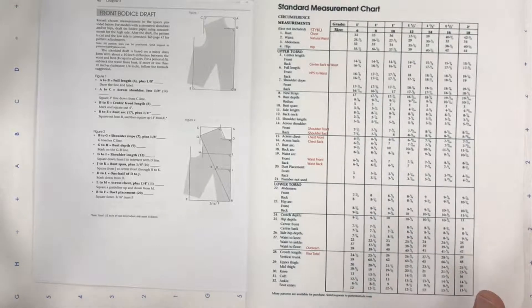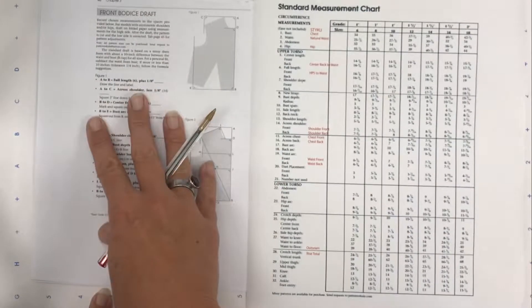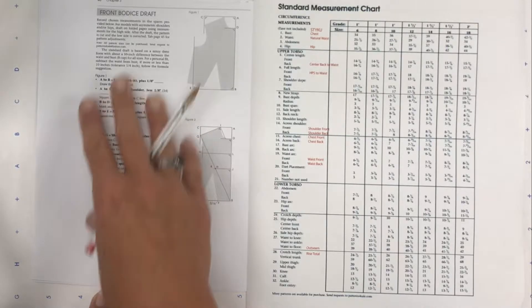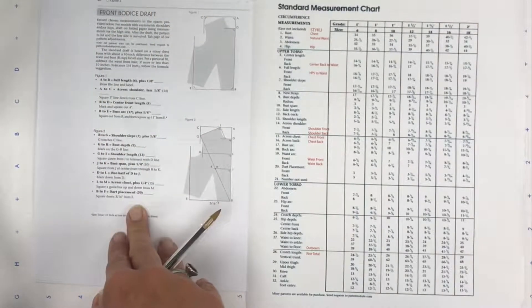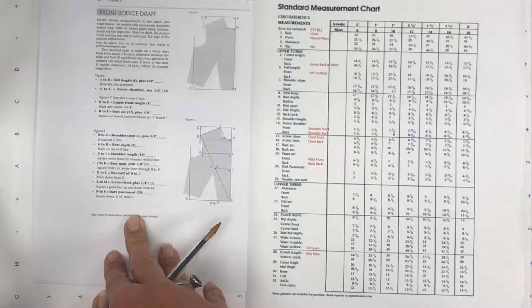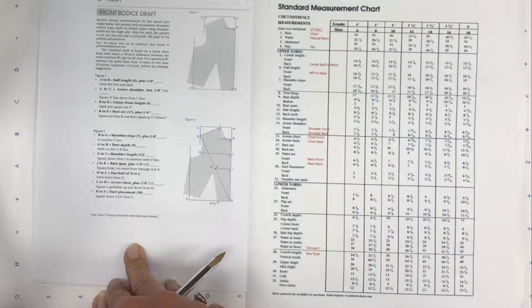Whatever measurements you choose, start by going to pages 40 and 41 and writing in all your measurements and doing all your math, that way it'll make all the rest of the steps a lot easier.